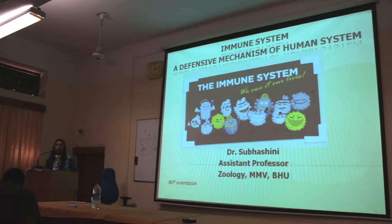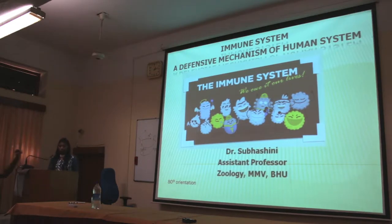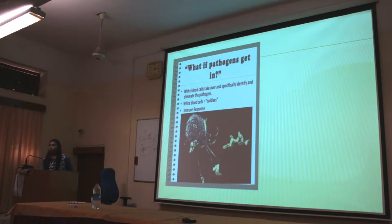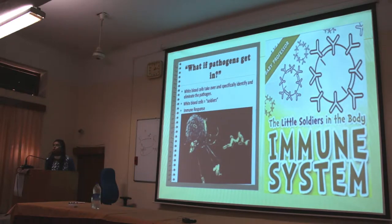We all know that we have a very well developed system for each and every function. Like for respiration, we have the respiratory system. For circulation of nutrition or air, we have the circulatory system. For digestion, we have the digestive system. Similarly, what happens if any pathogen enters your body? For that, we have a very well developed system called the immune system, which is also considered as the little soldier of our body.